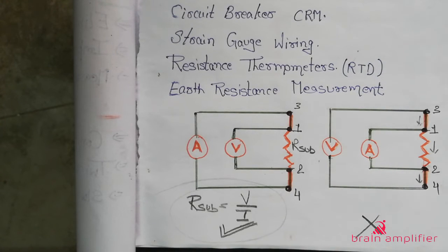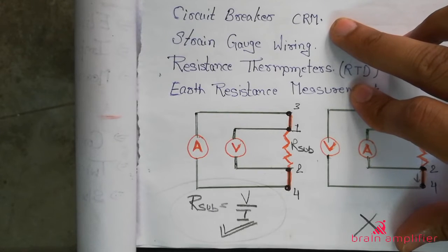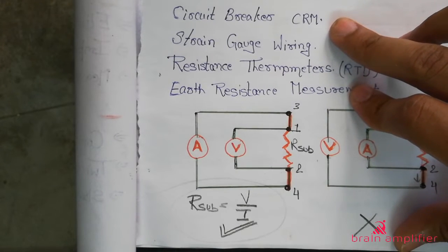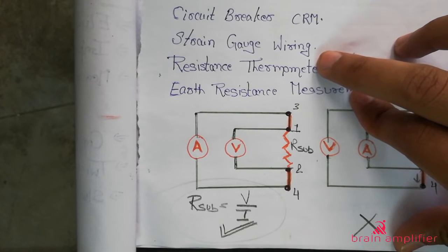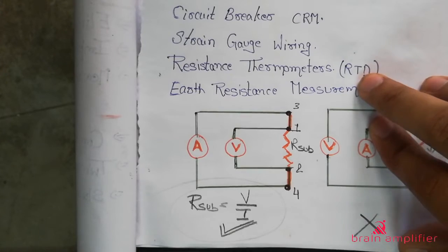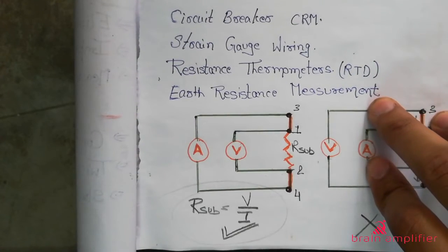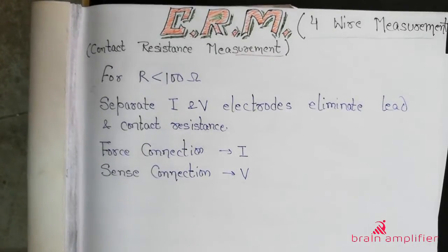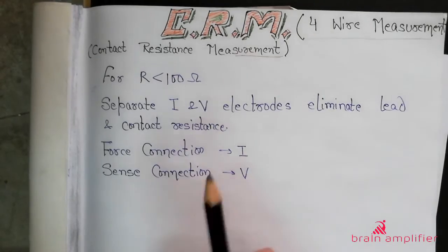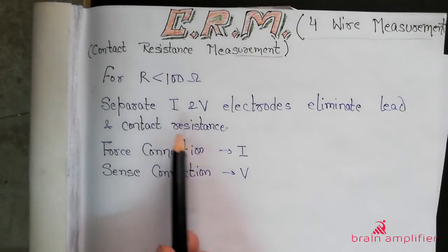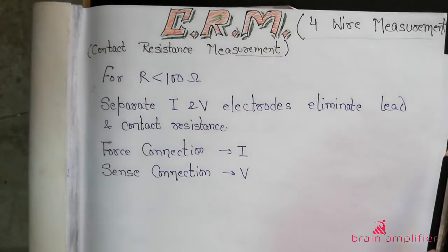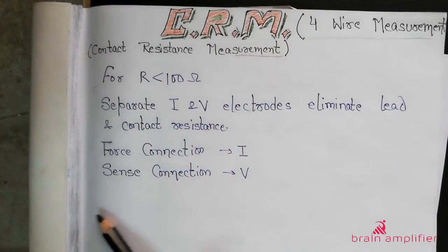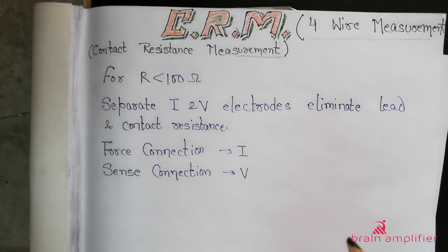The applications of four-wire measurement include circuit breaker contact resistance measurement, because those contact resistances are in the range of a few micro-ohms. It is also used in earth resistance measurement. In general, we use this technique when our resistance is less than 100 ohms. In this method we have separate current leads and voltage leads — current leads are called force connections and voltage leads are called sense connections.